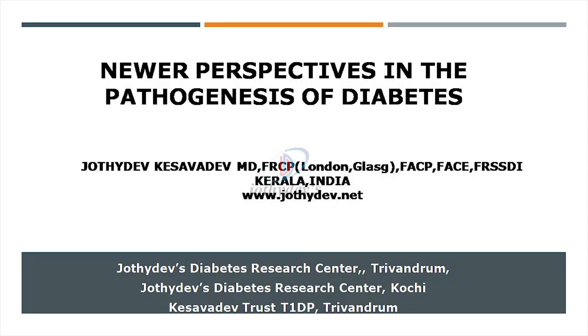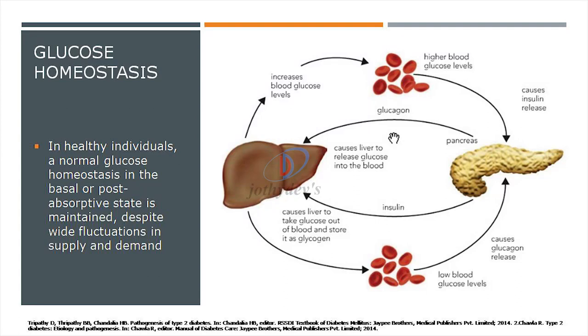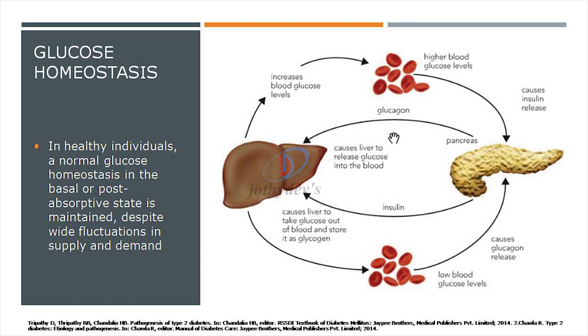Hello friends, welcome to this special edition of Gem's video — a professional edition focused on modern medical students and physicians. This lecture is on the pathophysiology of type 2 diabetes and newer developments. Normal glucose homeostasis in the basal or postprandial state is maintained despite wide fluctuations in supply and demand, through a regulated and dynamic interaction between tissue sensitivity to insulin and insulin secretion.